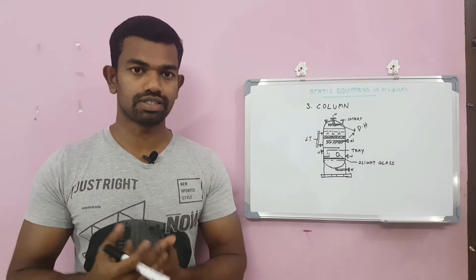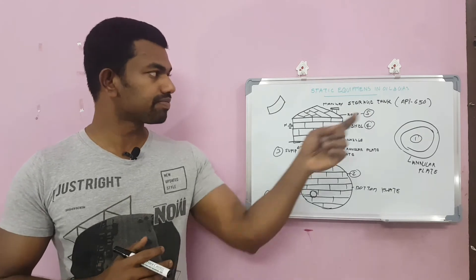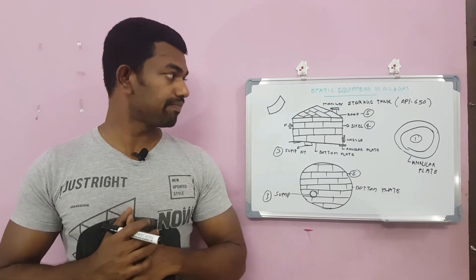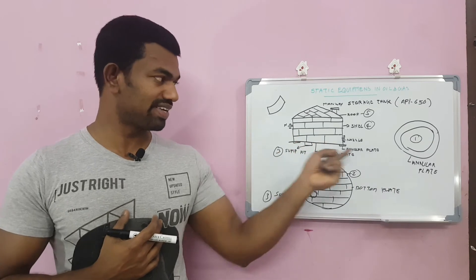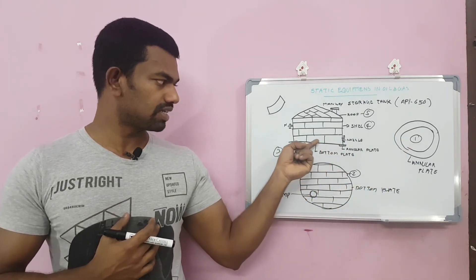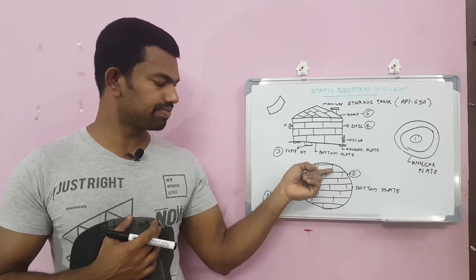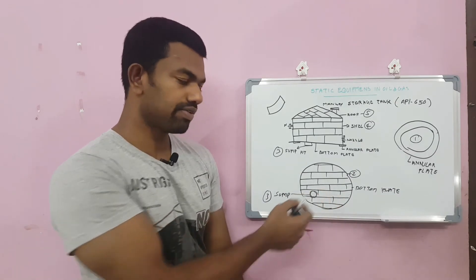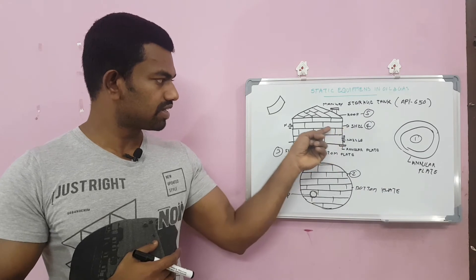Now let's see the storage tank. The international standard is API 650. The tanks have major five parts. The first one is annular plate. Second is the bottom plate. This is joining by many plates together and we will do the welding at the field. The third is shell.